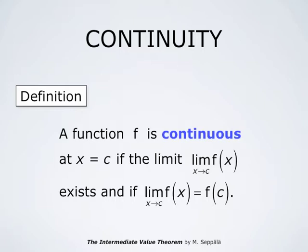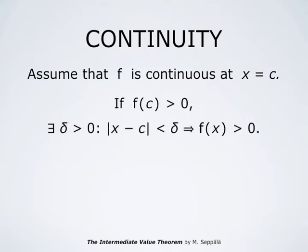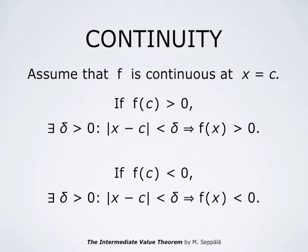If we now combine this definition with the previous result, we observe that if f is continuous at x = C and takes a positive value at that point, then there is a number delta which is positive such that whenever the absolute value of x minus C is less than delta, then f(x) is positive. In comparison to the result about positive limits, we have dropped the condition 0 less than the absolute value of x minus C, meaning we also allow x to equal C. Likewise, if f(C) is negative, then there is a positive number delta such that whenever the absolute value of x minus C is less than delta, then f(x) is negative. This follows from the first statement simply by replacing f by negative f.